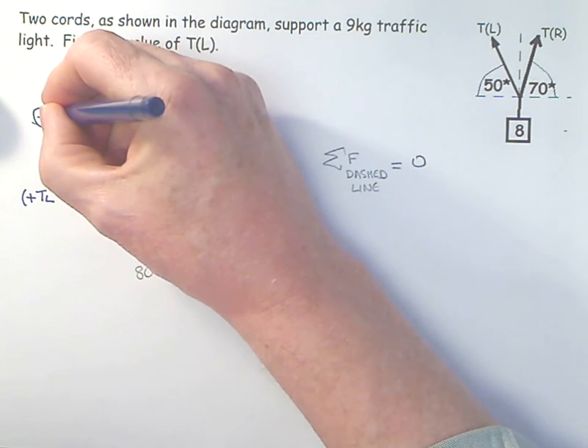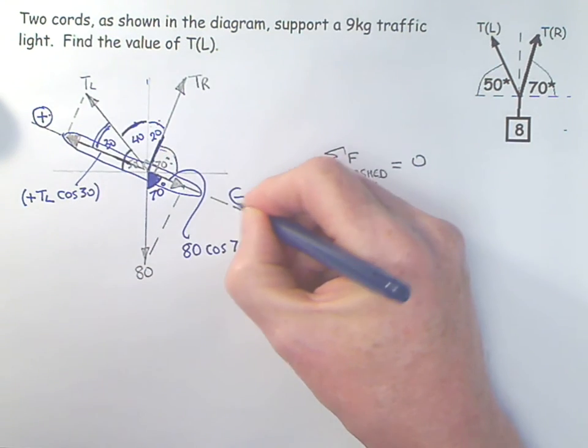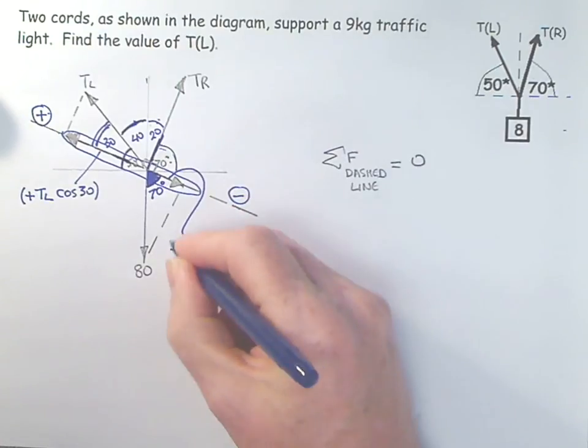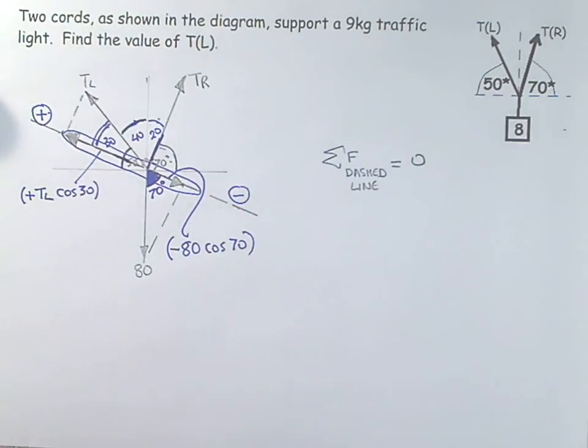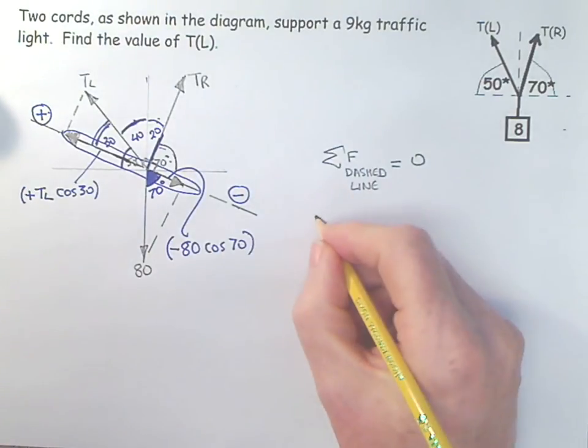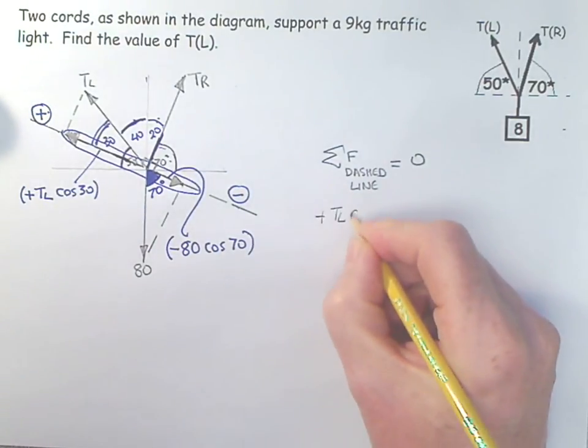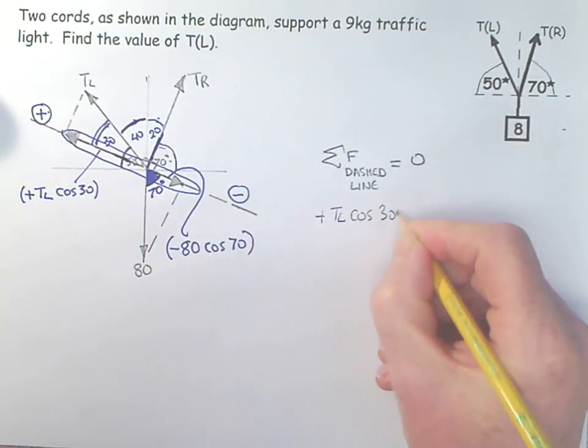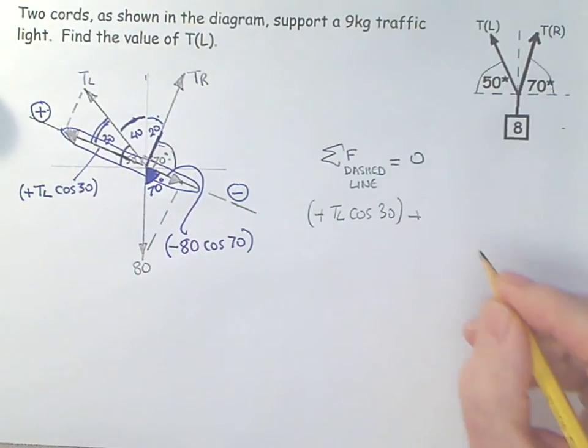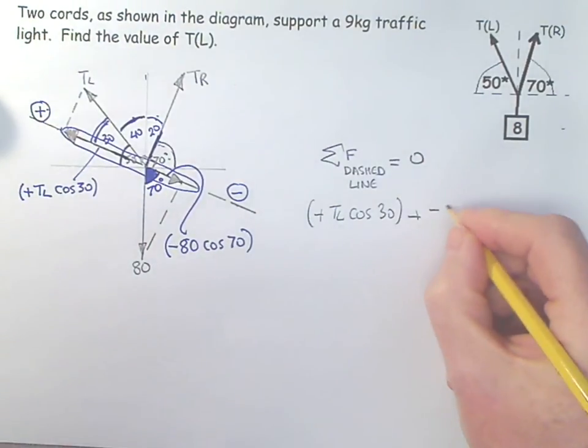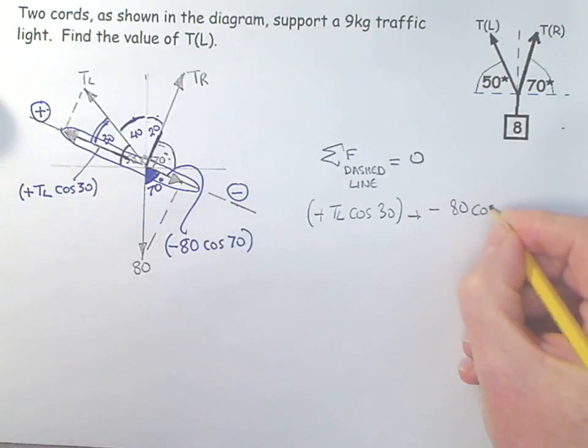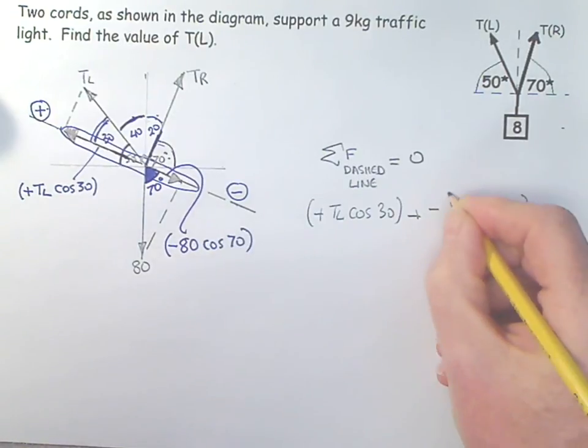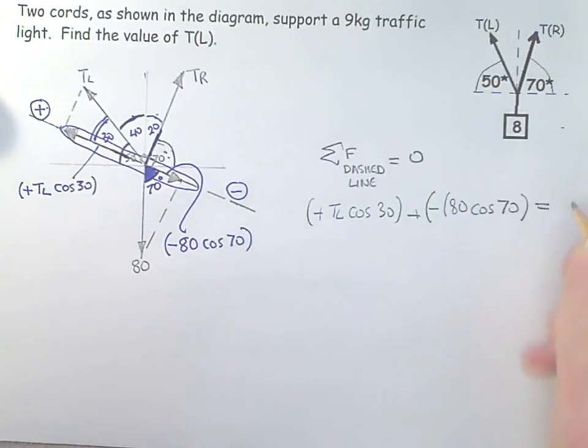Now that end was positive, so we have to make this end negative. So those are my two resolved forces. So I come back down to here and I say oh in that case, then plus TL cosine 30 added to minus 80 cosine 70 must equal zero.